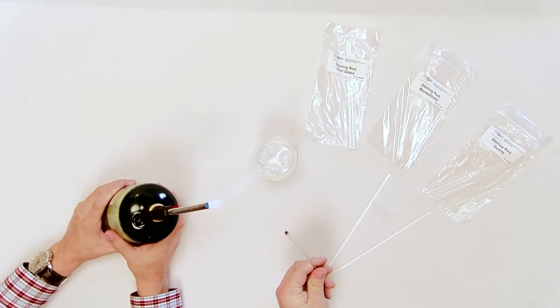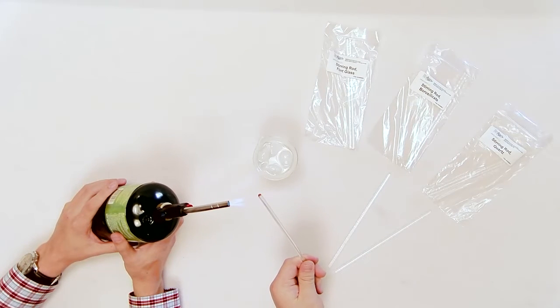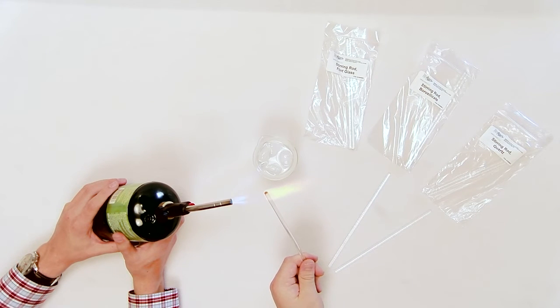Attach the torch head to the propane and turn on. Heat one end, about 1 inch, of the soda lime glass rod in the flame.